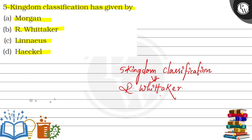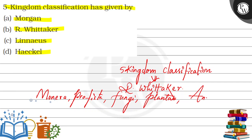What are the five Kingdoms? Kingdom Monera, Protista, Fungi, Plantae, and Animalia. These five Kingdoms are recognized.